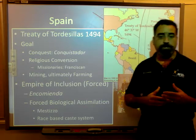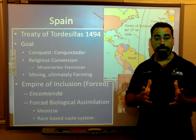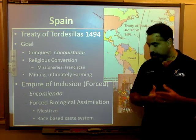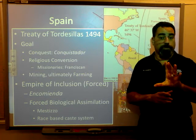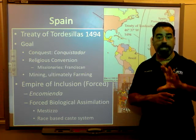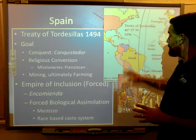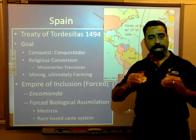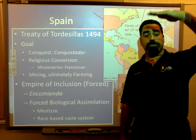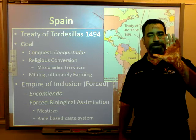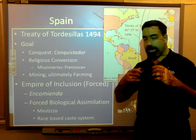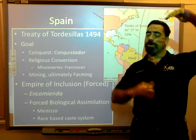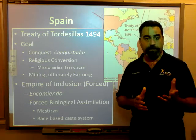What we'd refer to as biological assimilation — people of different cultures coming together to make babies — was in this case largely forced, resulting in mixed races and ethnicities. This was problematic for the Spanish, who saw their own culture as superior and pure. Ultimately, what happened in these Spanish colonies was the creation of a race-based class system, in which your social status was based on the purity of your European bloodline. The closer you were to the pure white European ideal, the closer you were to the top echelons of society. This marks the beginnings of racism.